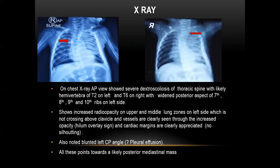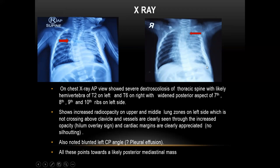On chest X-ray AP view, there is severe dextroscoliosis of the thoracic spine with likely hemivertebra of T2 on the left and T6 on the right, with widened posterior aspect of the 7th, 8th, 9th, and 10th ribs on the left side. Also shows increased radiopacity in the left upper and middle lung zone, not crossing above the clavicle, with vessels clearly visualized through the mass — that is the hilum overlay sign — and cardiac margins are separately and clearly visualized, indicating no silhouetting. Also noted blunted left costophrenic angle, indicating pleural effusion.